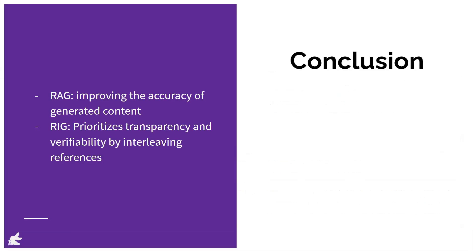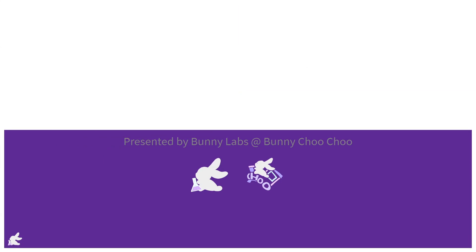In summary, while both RAG and RIG enhance the capabilities of language models through retrieval mechanisms, RAG focuses on improving the accuracy of generated content, whereas RIG prioritizes transparency and verifiability by interleaving references within the generated text.